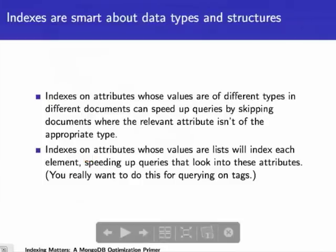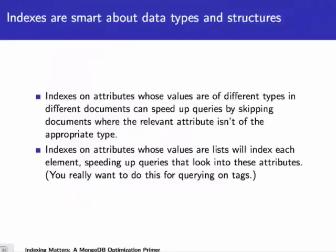Indexes are smart about data types and structures. MongoDB does not enforce constraints on the types stored in a particular field. If you have a field called username that generally stores strings but somehow has an integer stored there, that value will still be indexed. However, when you query, only results of the type you query with will be returned — if you query using a string, you only get string results back.